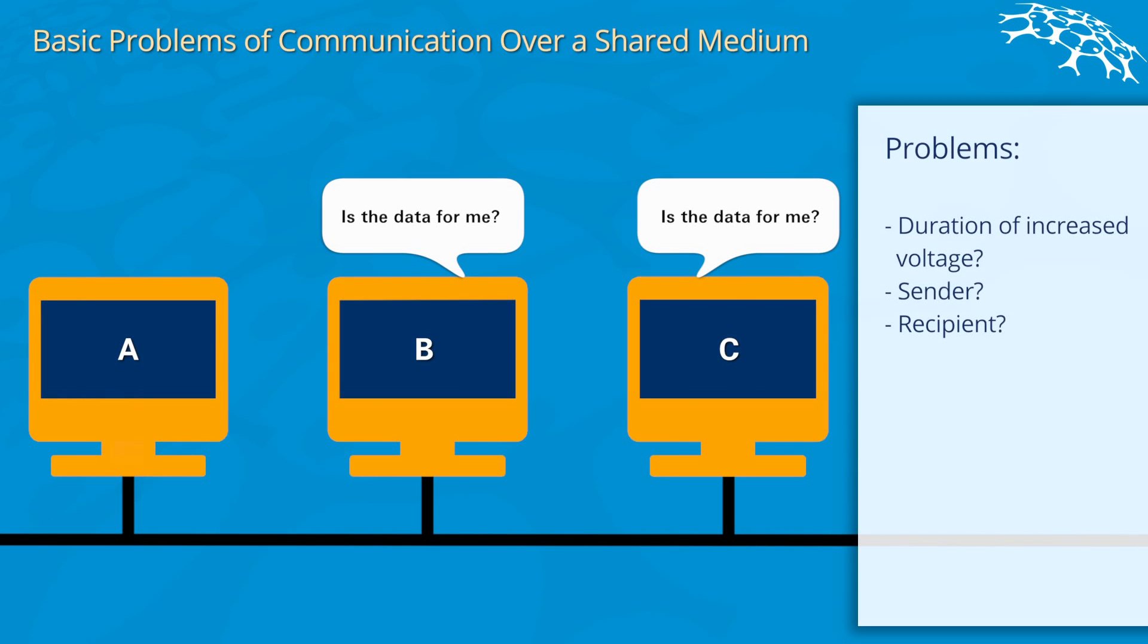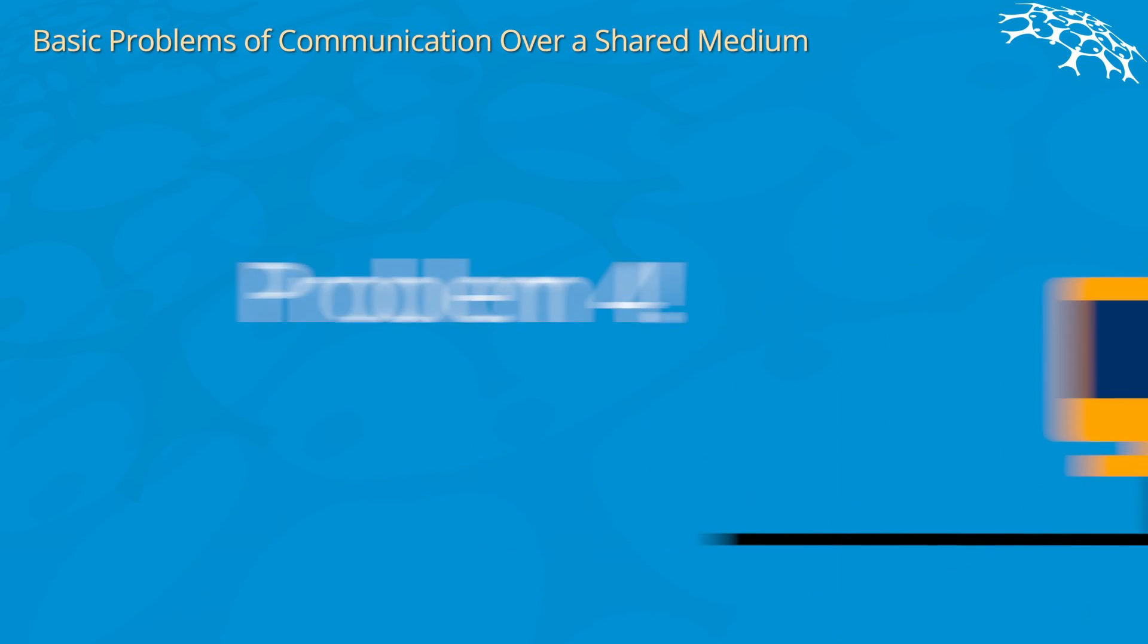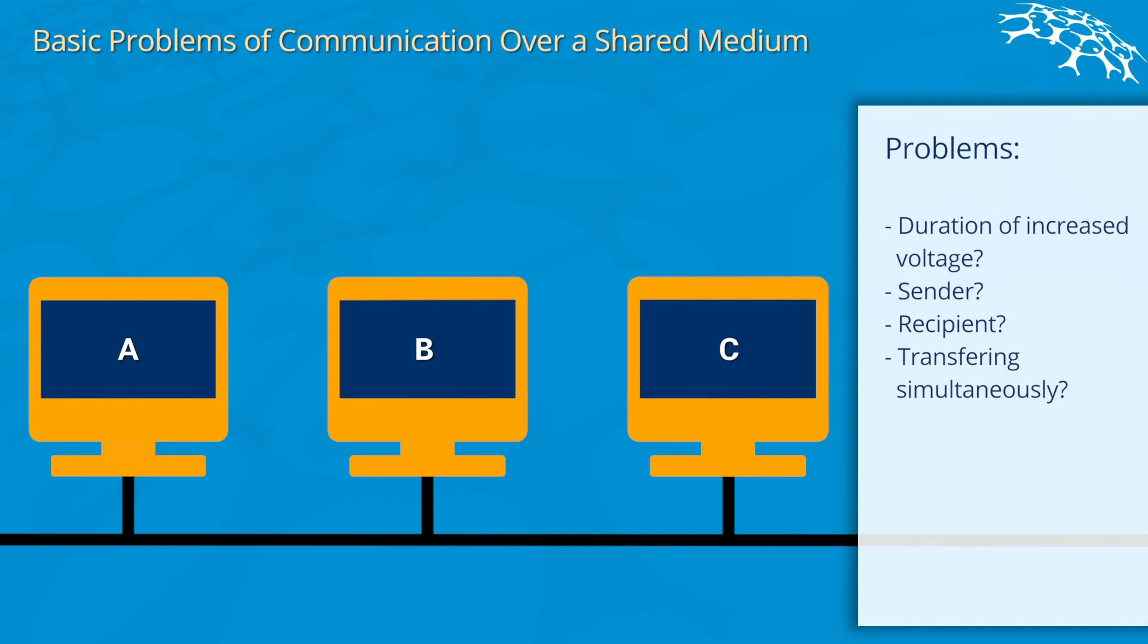And of course if you have a shared medium, another big problem is who is actually supposed to use the medium. So if A starts to transfer some data, at some point in time B might also decide, hey I want to use the medium and transfer some data. So now what's happening is that C receives corrupted data, because it receives the data from A and B, and this is not good.